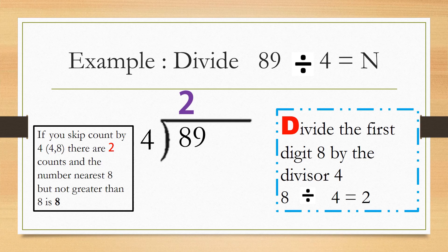Let's try to solve this: 89 divided by 4 equals N. Let's start with D — divide the first digit 8 by the divisor 4. 8 divided by 4 equals 2.